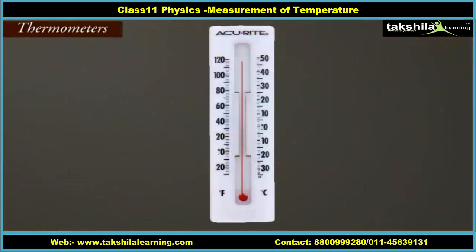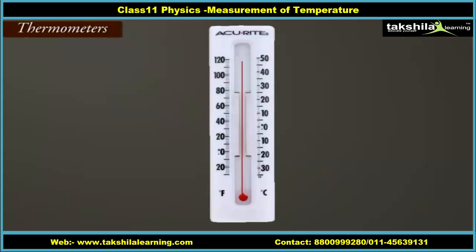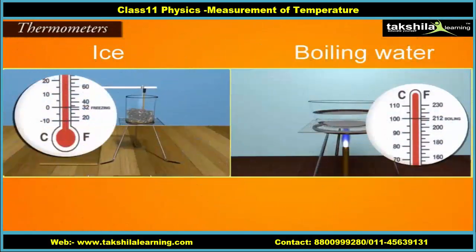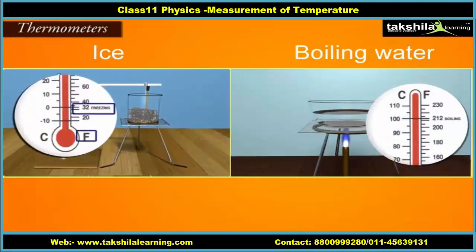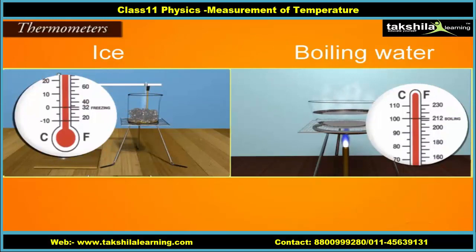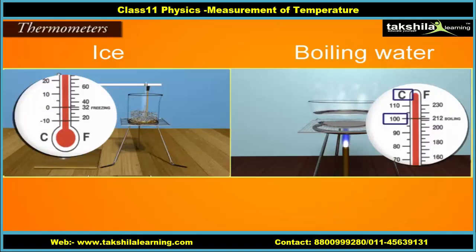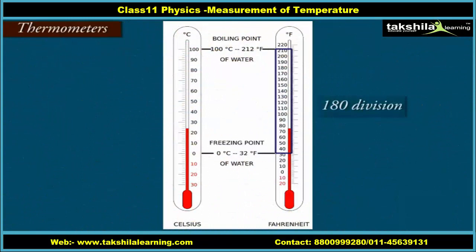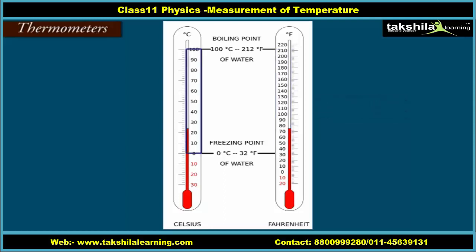The two familiar temperature scales are the Fahrenheit temperature scale and the Celsius temperature scale. The ice and steam points have values 32°F and 212°F respectively on the Fahrenheit scale, and 0°C and 100°C on the Celsius scale. On the Fahrenheit scale there are 180 equal intervals between the two reference points, and on the Celsius scale there are 100.